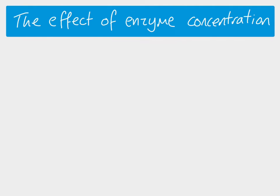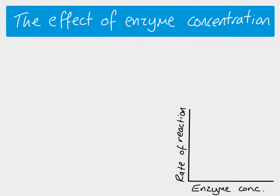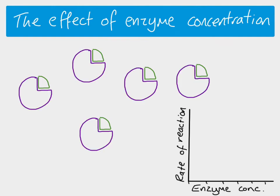Let's look now at the effect of enzyme concentration. If we plot a graph of enzyme concentration against the rate of reaction, and we keep the substrate concentration constant, just changing the concentration of enzymes — to begin with, let's say we have an enzyme concentration whereby each enzyme is able to combine with a substrate molecule at any one point in time. Every single enzyme molecule is combined to a substrate; there are no extra substrates unable to react and no enzymes not involved in a reaction. So this is our maximum possible rate of reaction — all of the active sites are filled.